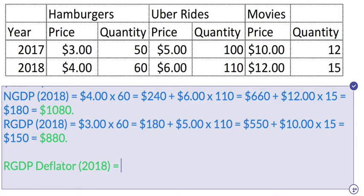Those are the only two things that you need. The real GDP price deflator for 2018, and for that matter any year, is simply the nominal GDP of that year divided by the real GDP for that year, and then multiplied times 100.